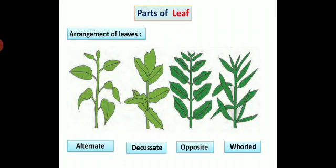Arrangement of leaves. Students, we can see different types of arrangement of leaves in different plants. Some types of arrangement of leaves are alternate, decussate, opposite and whorled.